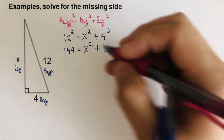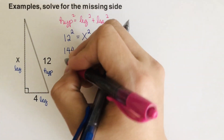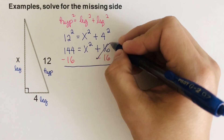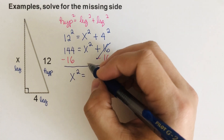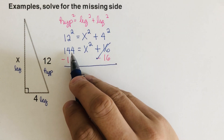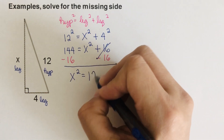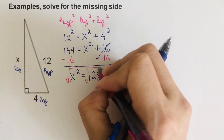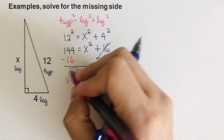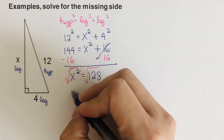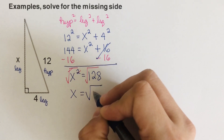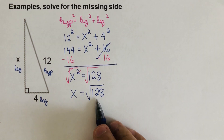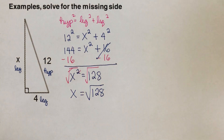Subtracting 16 from both sides, we get x squared equals 144 minus 16, which is 128. To solve for x, we square root both sides, giving x equals the square root of 128. But we can still simplify this radical, so we'll use the factor tree.